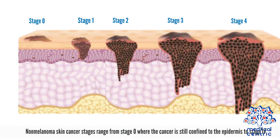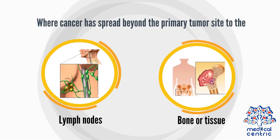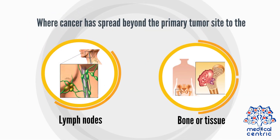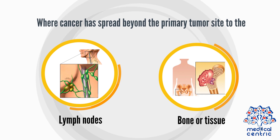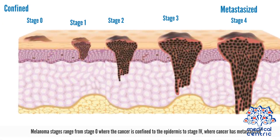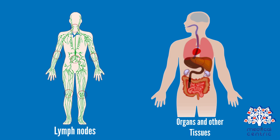Non-melanoma skin cancer stages range from stage 0, where the cancer is still confined to the epidermis, to stage 4, where cancer has spread beyond the primary tumor site to the lymph nodes and bone or tissue, and the cancer is larger than 3 centimeters. Melanoma stages range from stage 0, where the cancer is confined to the epidermis, to stage 4, where cancer has metastasized from the original site to the lymph nodes, organs, and other tissues in the body.